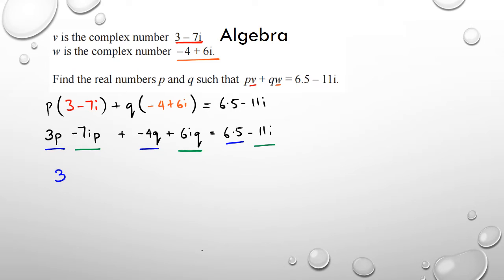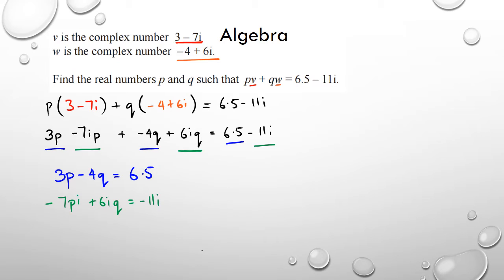So I can write a set of simultaneous equations: 3p minus 4q equals 6.5, and my second equation is negative 7ip plus 6iq equals negative 11i. Because there are i's on every term I can divide everything by i.